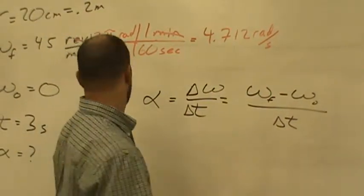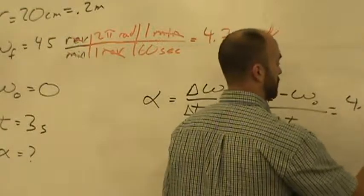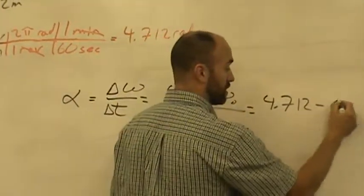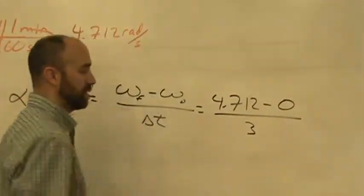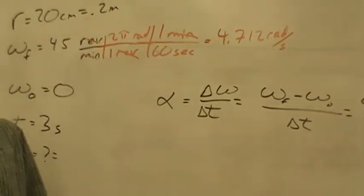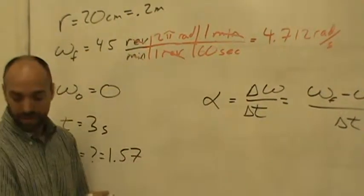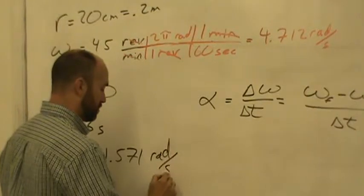So our final speed, that's 4.712 minus the initial speed, which was zero, because remember it was sitting there to start with, divided by the time, which was three seconds. So it's pretty straightforward. So you can punch that out in your calculator. The angular acceleration of this is 1.571 radians per second squared.